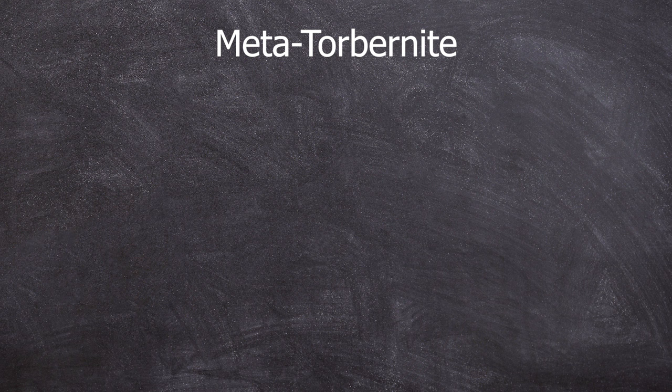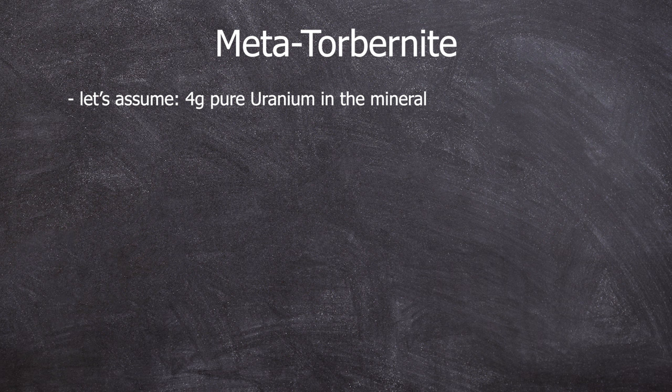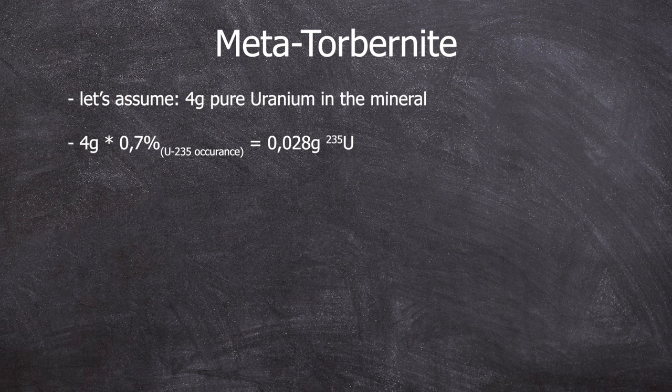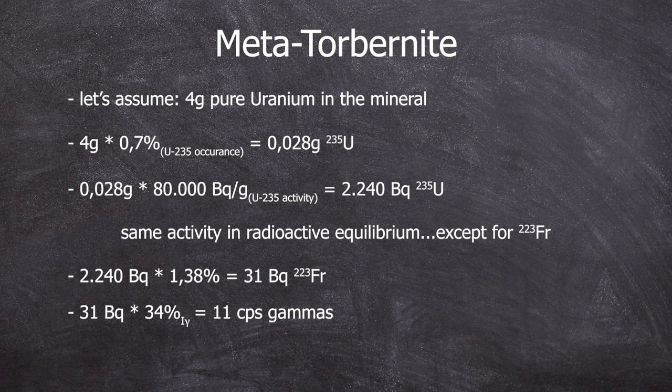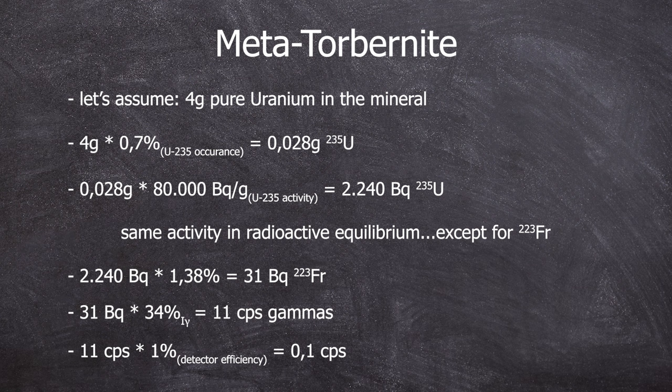Okay, to be honest, it only makes sense that we can't detect anything. Let's say we have 4 grams of pure uranium in this mineral. Of this 0.7% is uranium-235. That's 0.028 grams. At a specific activity of around about 80,000 becquerels per gram, this equates to 2,240 becquerels of uranium-235 activity. In radioactive equilibrium, all members of the decay chain have the same activity, except for francium, as it is formed only in 1.38% of all actinium-227 decays. Meaning you round up to have an activity of 31 becquerels of francium activity. With an occurrence probability of the 50 keV gamma lines of 34%, we come down to 11 gamma photons per second. And the detector has an efficiency of 1%. That's around 0.1 counts per second and this will definitely be lost in the background.